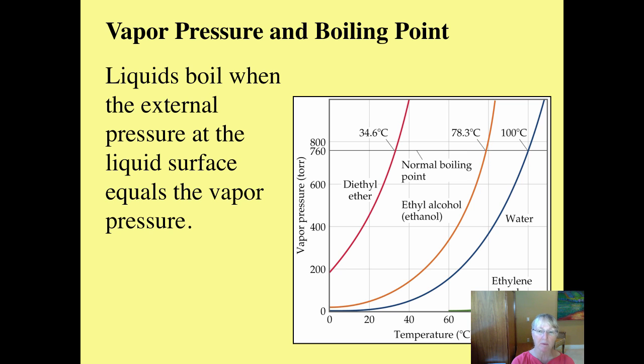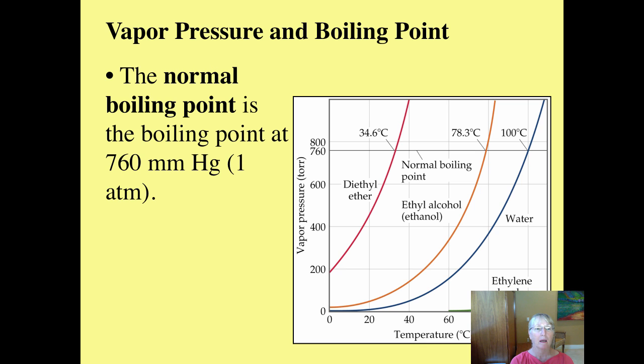So that's what we call a vapor pressure curve. And as you will see when we study phase diagrams, it makes one part of the phase diagram. Let that go for later. So this is called the normal boiling point at 760 millimeters of mercury or one atmosphere. And essentially it's when the vapor pressure curve crosses the atmospheric pressure line.